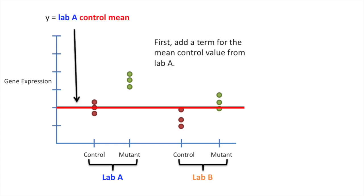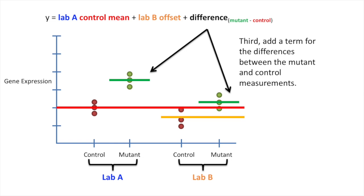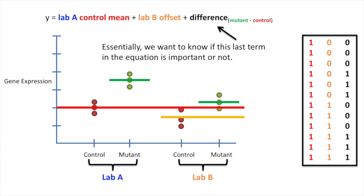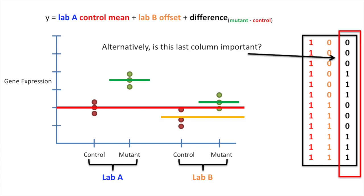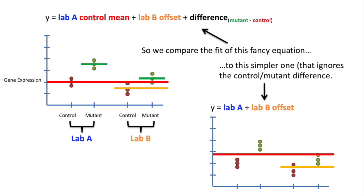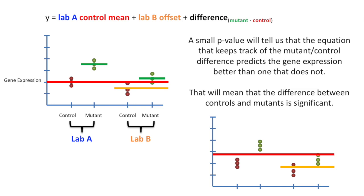Here's how to do it. First, add a term for the mean control value from Lab A. Second, add a term for the Lab B offset — this takes care of the batch effect. Third, add a term for the differences between the mutant and control measurements. Here's the design matrix. Essentially, we want to know if that last term in the equation is important, i.e., whether the last column is important. So we compare the fancy equation to a simpler one that ignores the control-mutant difference. A small p-value will tell us that accounting for mutant-control differences predicts gene expression better, meaning the difference between controls and mutants is significant.